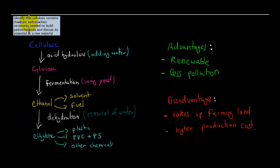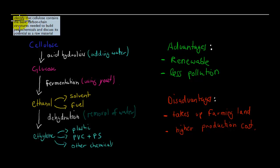And now we have identified that cellulose contains the basic carbon structure needed to build petrochemicals. So cellulose, if we add water, we go from cellulose to glucose. If we use a yeast, we ferment it and go from glucose to ethanol. With ethanol we can produce solvents and fuel. And we can also dehydrate ethanol to make ethylene. With ethylene we can make plastics, PVC, polystyrene, polyvinyl chloride, and other chemicals. So cellulose has the basic carbon structure to allow us to make these petrochemicals.